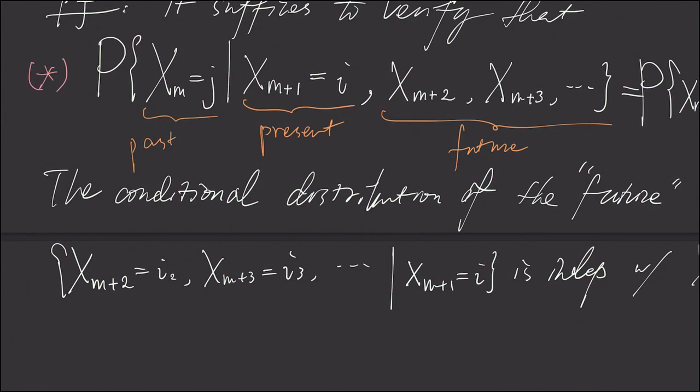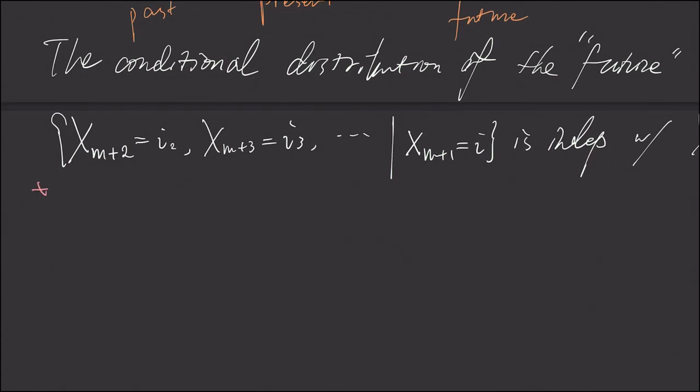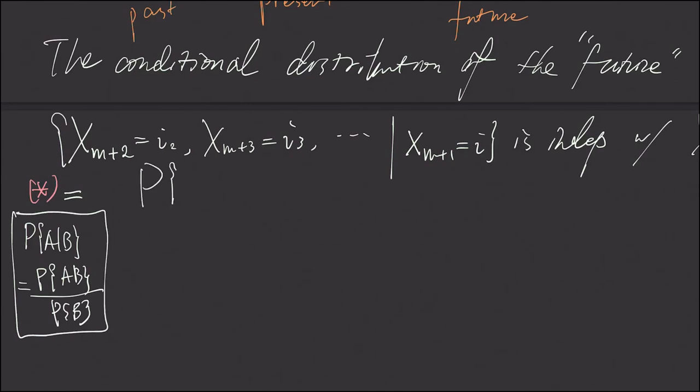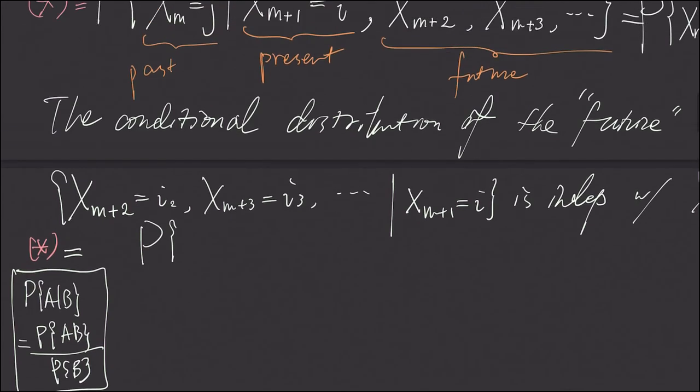Now for the left side of this equation right here, let's say this is equation star, which is the left side of the equation above. By our definition of conditional probability, which is P(A|B) equals P(A,B) divided by P(B), this can be written as X sub M is j, X sub M plus 1 is i, and X sub M plus 2 is i2, etc.